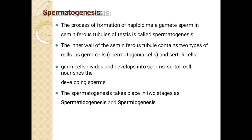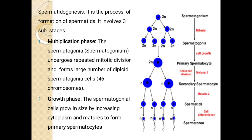The inner wall of seminiferous tubules contains two types of cells: one is germ cells — spermatogonia — for sperm formation, and the other is Sertoli cells for support and nutrition. Spermatogenesis takes place in two stages: spermatocytogenesis and spermiogenesis. Spermatocytogenesis is the process of formation of spermatids, which has three stages: multiplication phase, growth phase, and maturation phase.